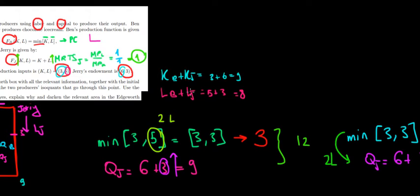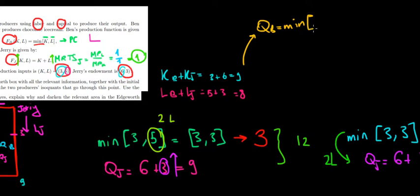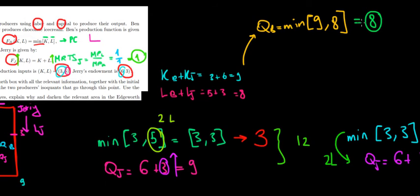What if we give all nine units of capital and all nine units of labor to Ben? Ben's production function will be the minimum between nine units of capital and eight units of labor in total. The minimum between them is going to be equal to eight, so the actual production will be eight units if Ben produces.